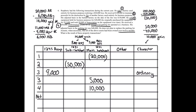Now we can do some netting. We start with the Section 1231 sub-hodgepot — there's only one transaction, so the net result is negative $50,000. Everything in the sub-hodgepot is treated as ordinary, so the second transaction results in an ordinary $50,000 loss. Now we go to the main hodgepot. We net everything in the main hodgepot and we get a loss of $5,000. That means everything in the main hodgepot is considered ordinary.